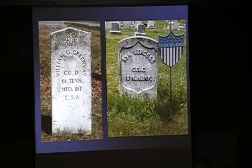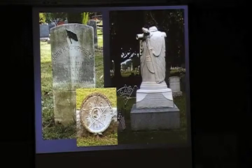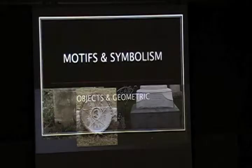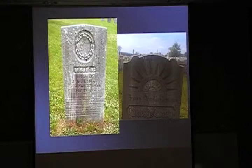Then Confederate on the left and Union on the right — that one is Grand Army of the Republic. You probably won't see those down here; that's the Union equivalent of the Confederate veterans. The one on the right is a sunburst, in a Lutheran-German cemetery in New Hampshire.